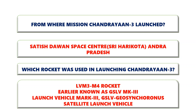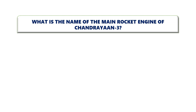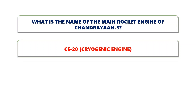The full form of LVM is Launch Vehicle Mark-3. The full form of GSLV is Geosynchronous Satellite Launch Vehicle. The name of the main rocket engine of Chandrayaan-3 is CE-20, where CE stands for Cryogenic Engine.